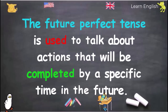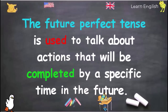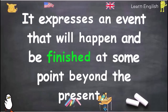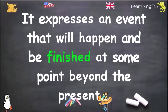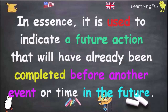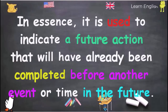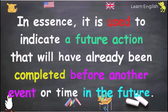The Future Perfect Tense is used to talk about actions that will be completed by a specific time in the future. It expresses an event that will happen and be finished at some point beyond the present. In essence, it is used to indicate a future action that will have already been completed before another event or time in the future.